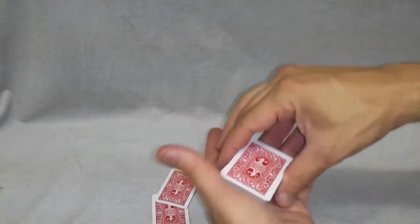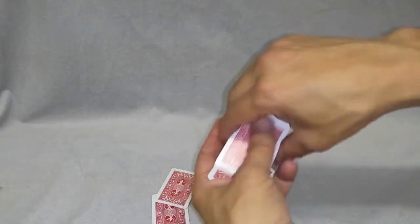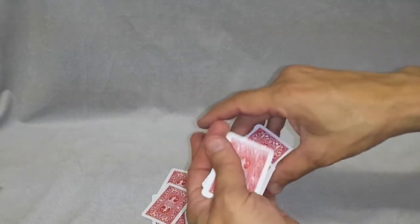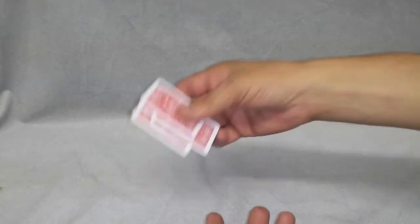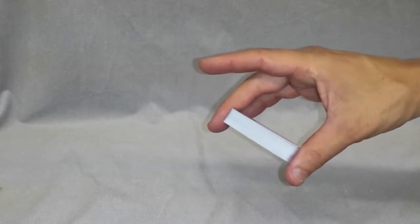And one more time. Tell me when to stop. Stop. Flash them the card—that's your five. Throw that back on top. Then you've got the three force cards. You can burn them back into the deck, whatever you want to do.